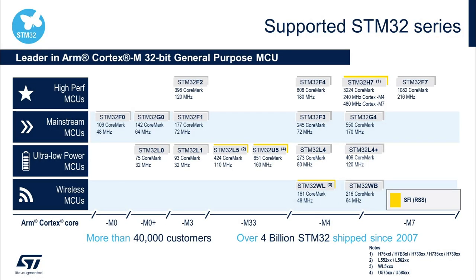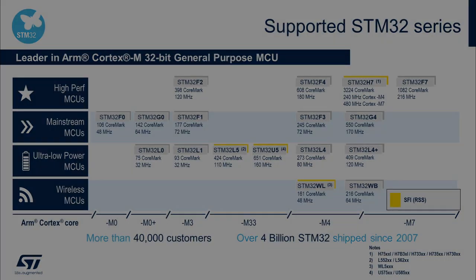SFI is supported by STM32H7, STM32L5, STM32U5, and STM32WL, which are provided with the RSS extension of the system bootloader code. Additional details are provided in a dedicated section for STM32 implementation later in this video, along with some references to the necessary documentation where you will find all information for each family.